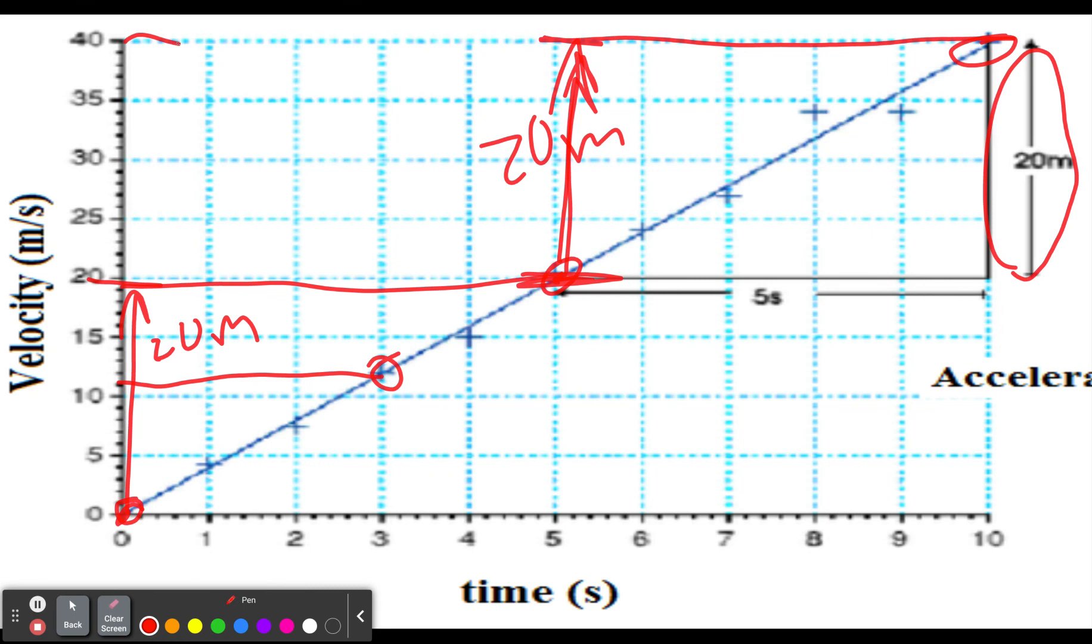So that would be our numerator, 20. And then always keep your units with you. 20 meters per second.